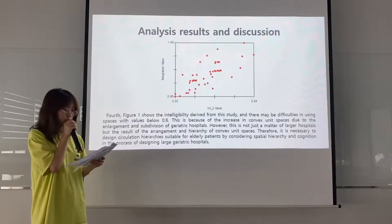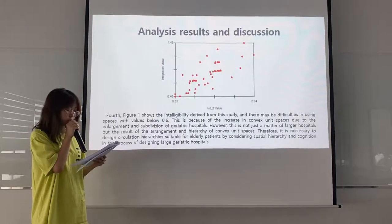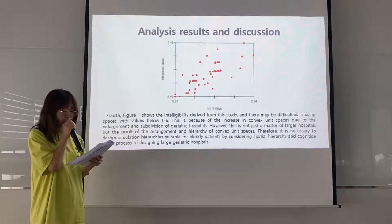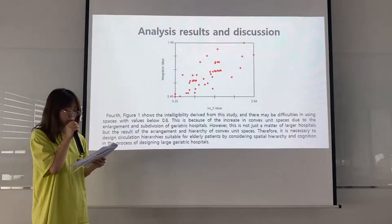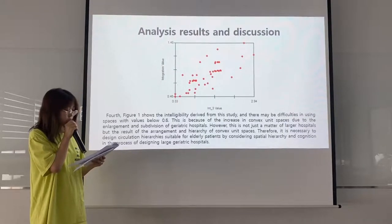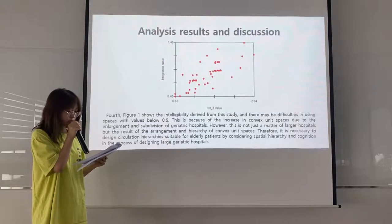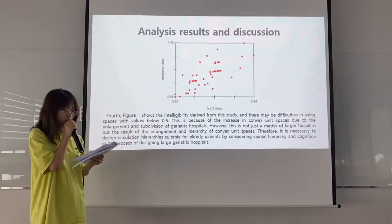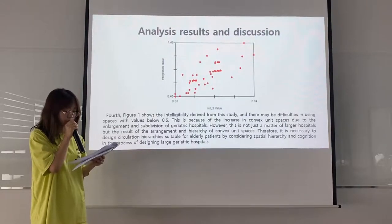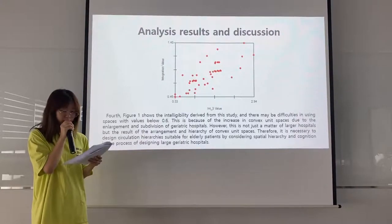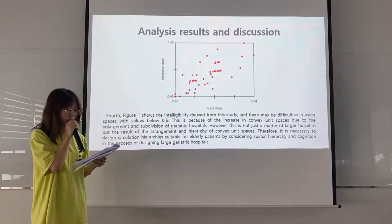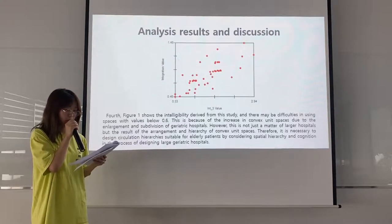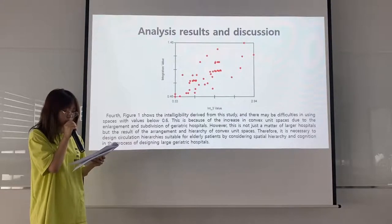Figure 1 shows the intelligibility derived from this study, and there may be difficulties in using spaces with values below 0.6. This is because of the increase in convex unit spaces due to the enlargement and subdivision of geriatric hospitals. However, this is not just the result of larger hospitals, but the result of the arrangement and hierarchy of convex unit spaces. Therefore, it is necessary to design secondary spatial hierarchies suitable for elderly patients by considering spatial hierarchy and cognition in the process of designing large geriatric hospitals.